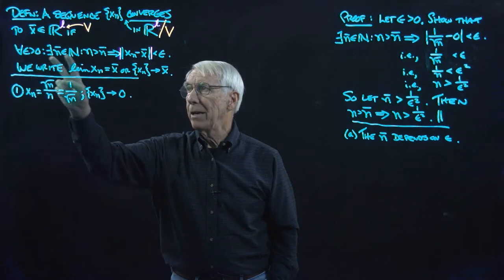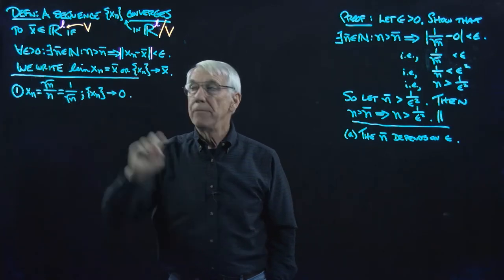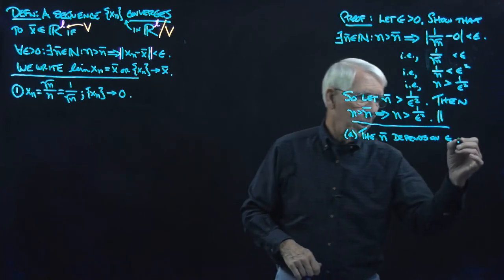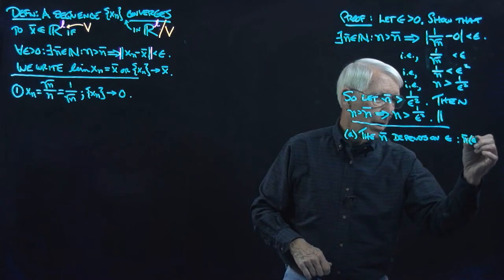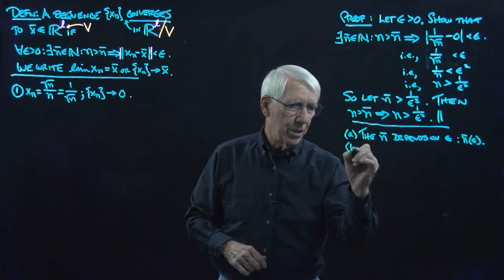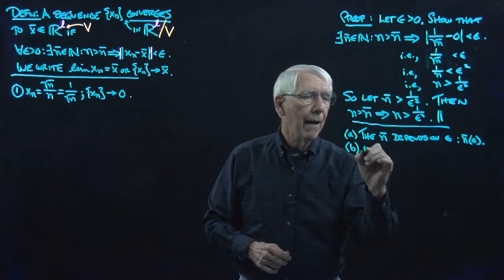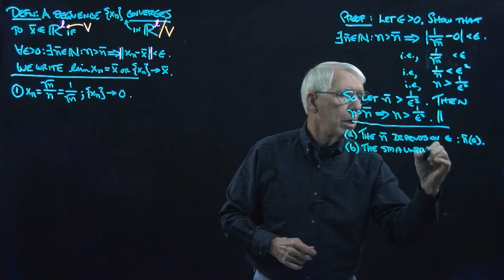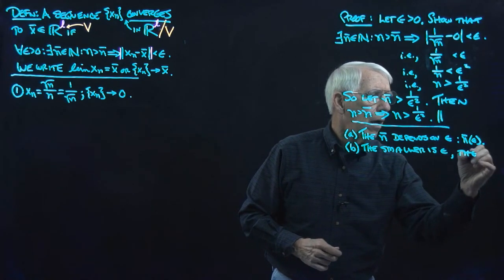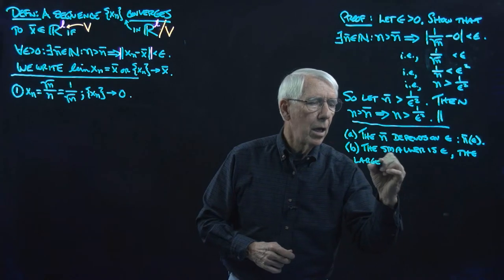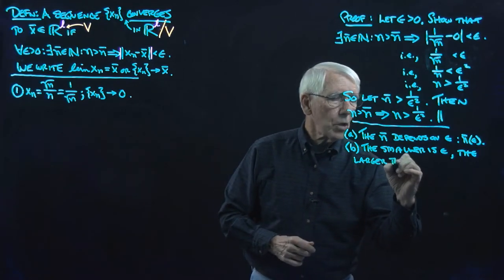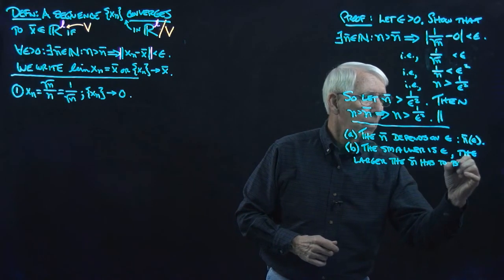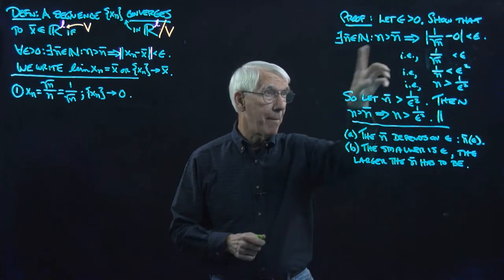So N̄ depends on epsilon, and that's okay according to this quantified statement. For every epsilon, I've got to find an N̄, but the N̄ can depend on the epsilon. In fact, we sometimes even write it N̄(epsilon) — and the second thing to note is that the smaller epsilon is, the larger the N̄ has to be in general.